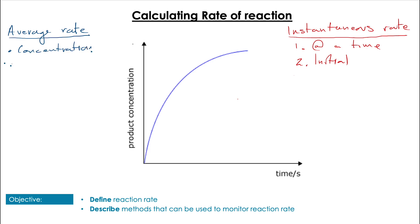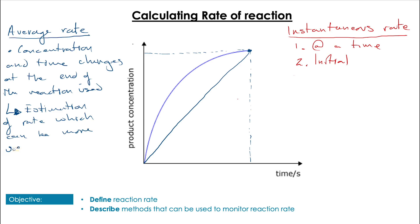The average rate we calculate by using the concentration and the time change at the end of the reaction. That ends up giving us a straight line gradient from these two points. We can already see that that's going to be an estimation of the rate of reaction. There are some issues with calculating the rate of reaction in this way, and it's more useful for some reactions than others because we're effectively missing this whole component of the curve of the actual rate of reaction.